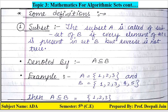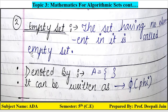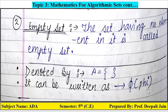The second definition is empty set. The set having no elements in it is called an empty set. It means the set is empty — nothing is present inside it — only opening and closing curly braces. It is denoted by phi (φ), and can also be written as φ in that way.